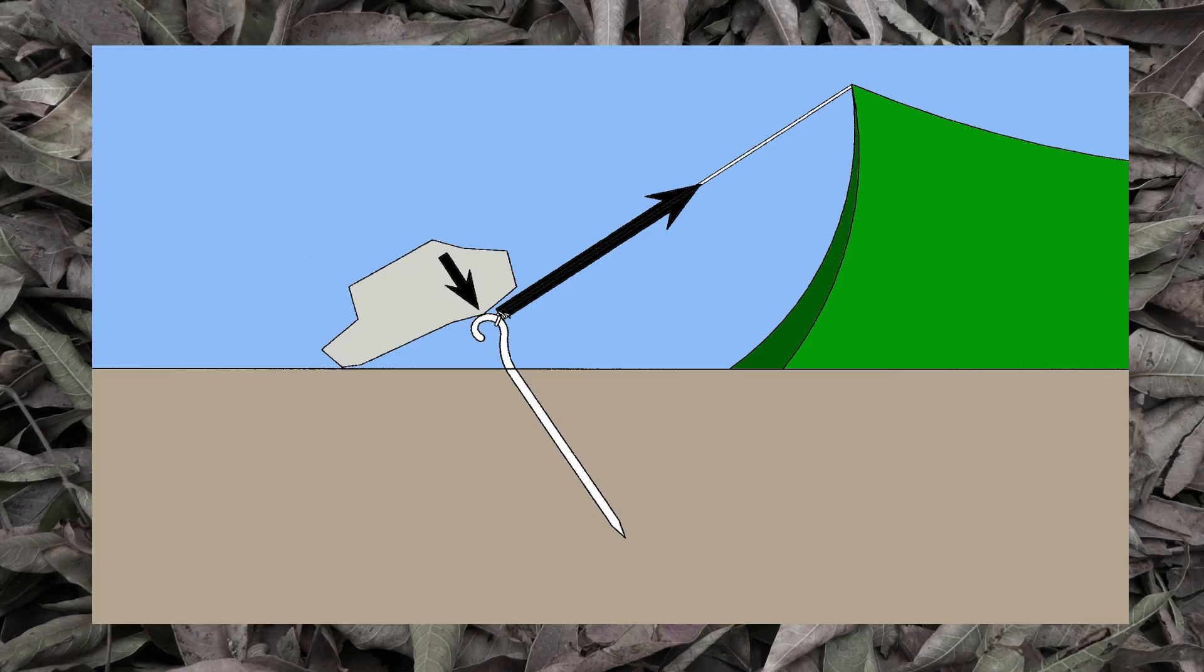This also works best with a long guy line, since the longer line minimizes any vertical force on both the tent peg and the rock. If you try this trick right next to your tent, the wind can be strong enough to flip the rock off as it pulls the peg out of the ground.